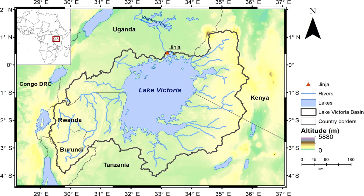The only outflow from Lake Victoria is the Nile, which exits the lake near Jinja, Uganda. In terms of water supply, this makes Lake Victoria the main source of the longest arm of the Nile. However, the most distal source of the Nile basin, and therefore the ultimate source of the Nile, is more often considered to be one of the tributaries of the Kagera River.